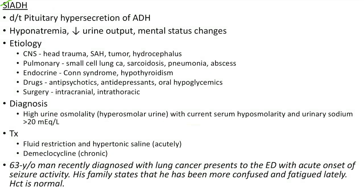Now let us see about syndrome of inappropriate ADH secretion (SIADH). It occurs due to pituitary hypersecretion of antidiuretic hormone. There will be hyponatremia, low urine output and mental status changes. Causes include head trauma, subarachnoid hemorrhage, CNS tumors and hydrocephalus. Pulmonary causes include small cell lung carcinoma, sarcoidosis, pneumonia and abscess. It can also occur due to Conn's syndrome and hypothyroidism. Drugs like antipsychotics, antidepressants and oral hypoglycemics can cause SIADH. Intracranial and intrathoracic surgeries can also lead to SIADH.